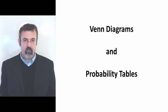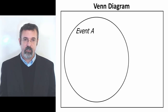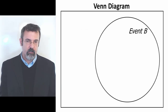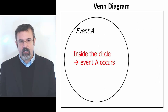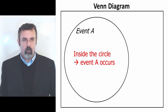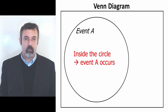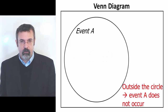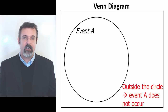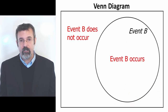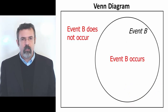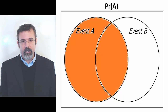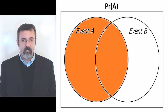In this example, we have two events. Event A represented by a circle, and Event B also represented by a circle. The area inside the Event A circle corresponds to Event A occurring. The area outside the Event A circle corresponds to Event A not occurring, and similarly with Event B. So when we talk about the probability of Event A occurring, we are referring to the area inside the Event A circle.